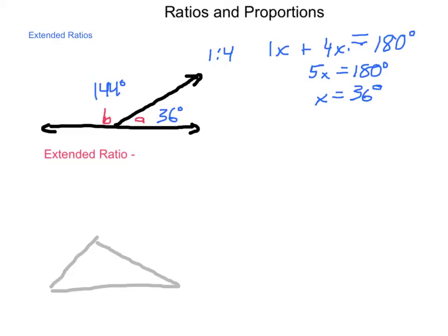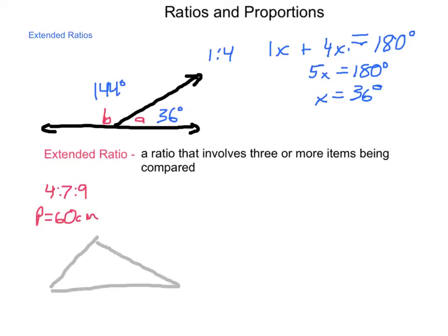Dividing both sides by 5, using our division property of equality, we come out with x equaling 36 degrees. So, angle A is 36 degrees. Angle B is 4 times that, at a total of 144 degrees. So, this is how we can work when we have just two pieces, is using a ratio. But, there is a concept called the extended ratio. An extended ratio is a ratio that involves three or more items being compared.